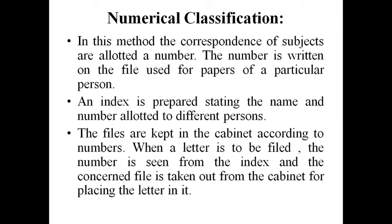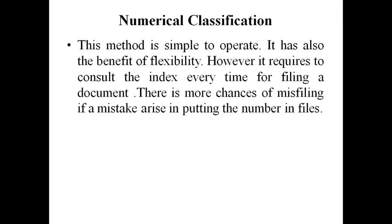Numerical classification: from the name you can guess that numerics, that is numbers, are used for classification. In this method, correspondence or subjects are allotted a number. The number is written on the file used for papers of a particular person. An index is prepared stating the name and number allotted to different persons. The files are kept in the cabinet according to numbers. When a letter is to be filed, the number is seen from the index and the concerned file is taken out. Similar to alphabetical classification, this method is also simple to operate and has the benefit of flexibility. However, it requires consulting the index every time for filing a document, and there are more chances of misfiling if a mistake is made in putting the number on files.